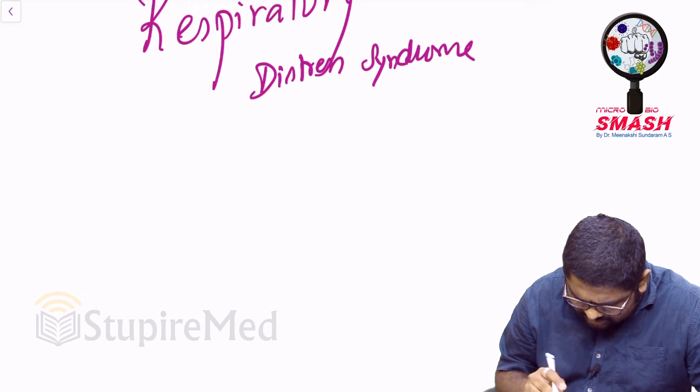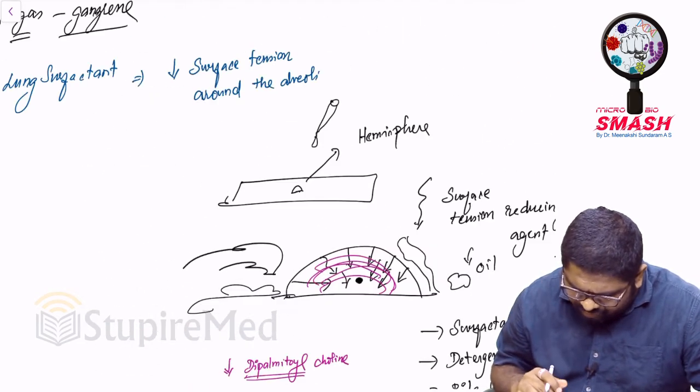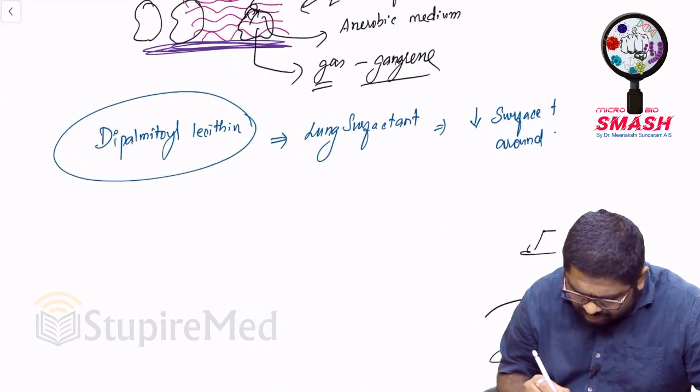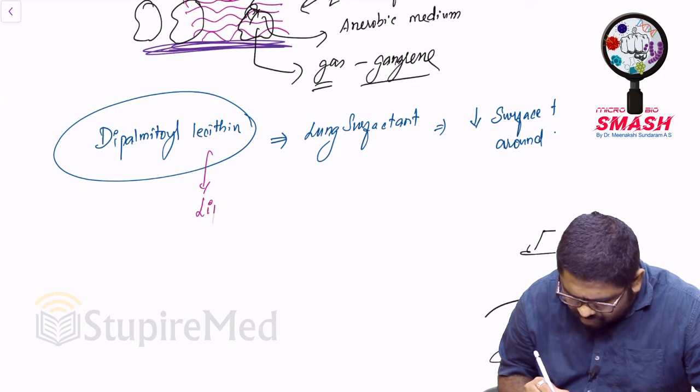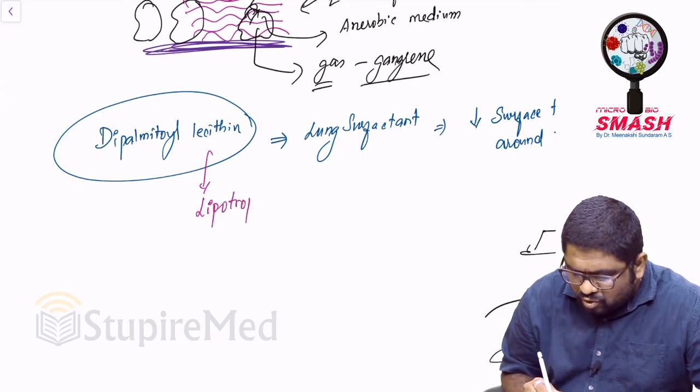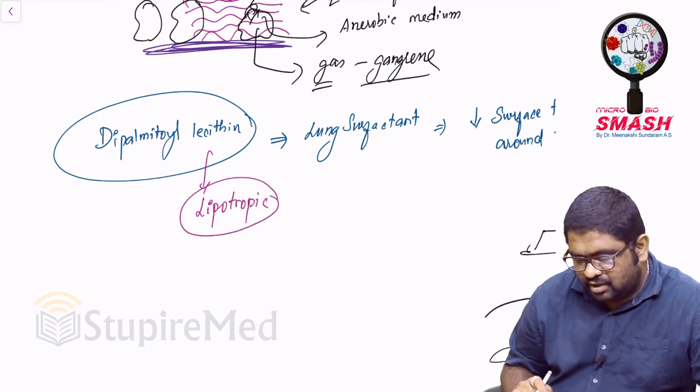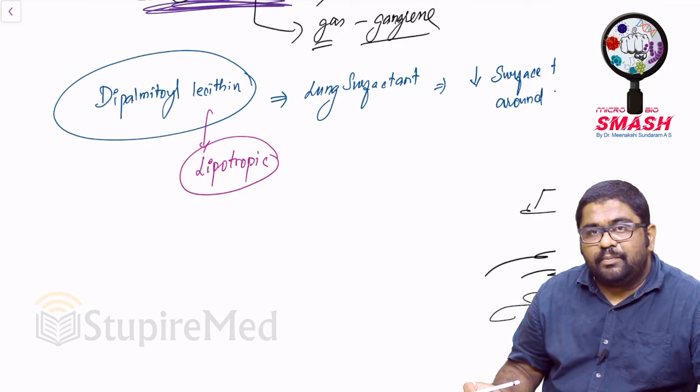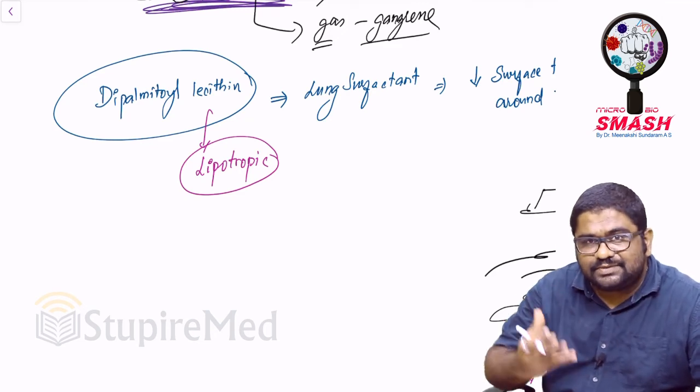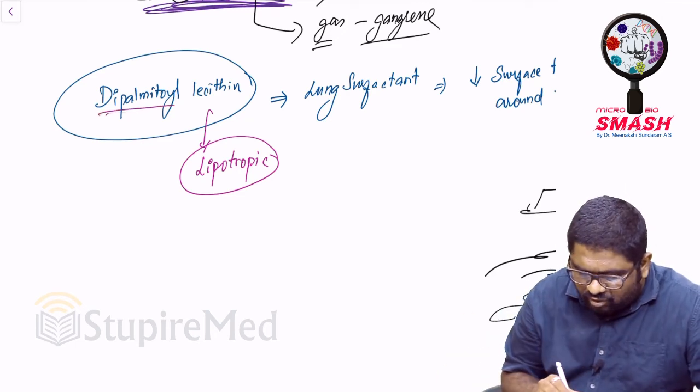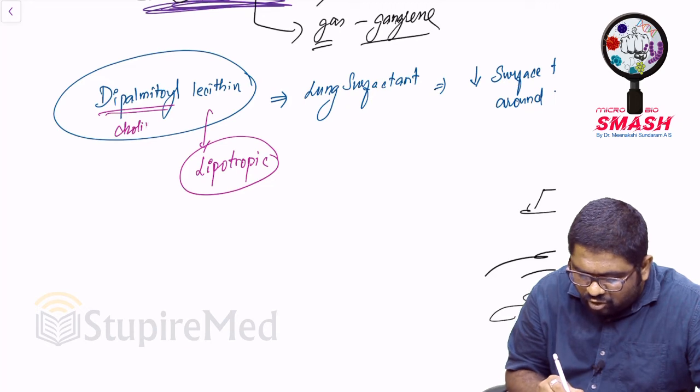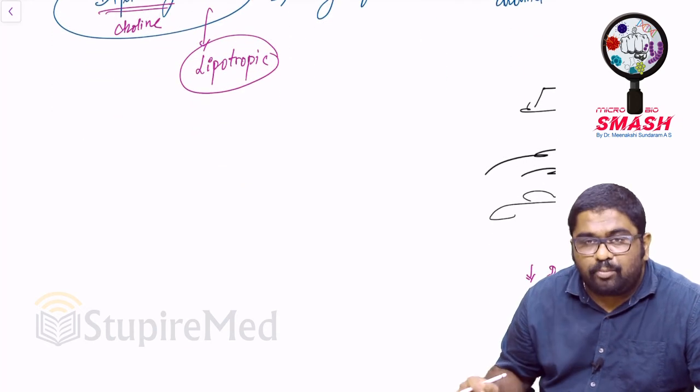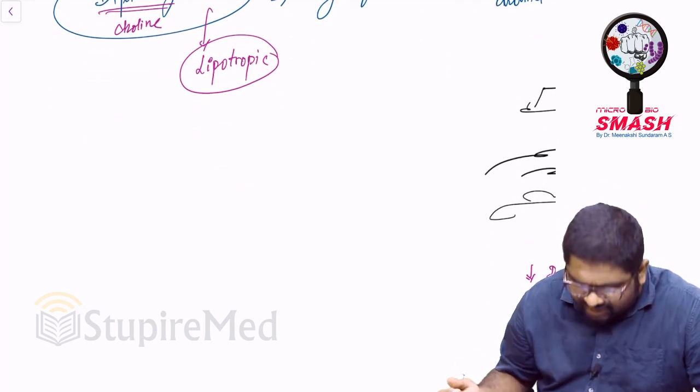Now lecithin is also an important component of lipotropic factors present in your body. I told you choline, betaine, etc. And lecithin or dipalmitoyl choline contains more amount of choline. It is capable of offering you more amount of methyl groups that can be helpful for mobilization of fatty acids, prevention of fatty liver.